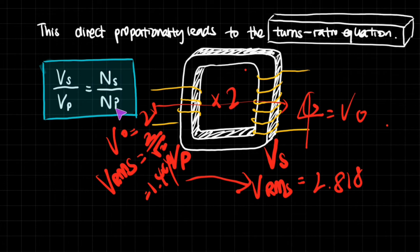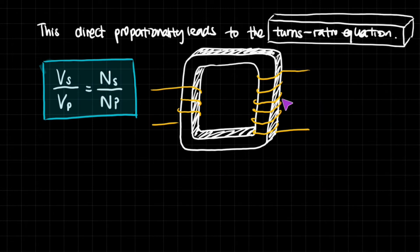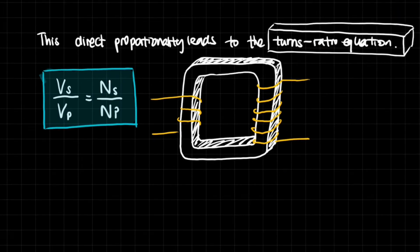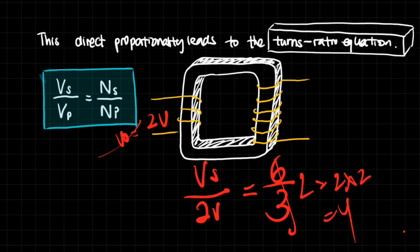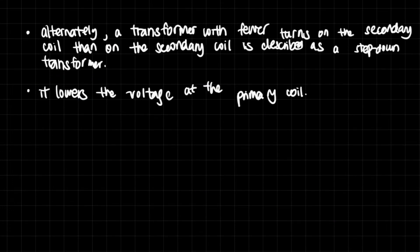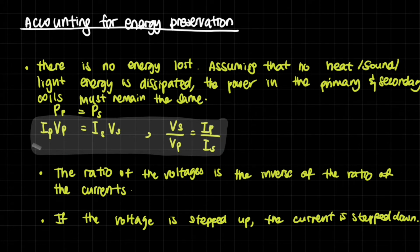The turns ratio equation states that NS over NP equals VS over VP. In our example, the secondary coil has six turns and the primary has three turns, and the primary coil has a voltage of 2 V, so the secondary voltage equals (6/3) × 2 = 4 V. Alternatively, a transformer with fewer turns on the secondary coil than on the primary coil is described as a step-down transformer — it lowers the voltage — and you can also use the turns ratio equation for this.